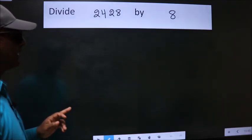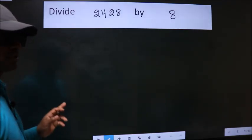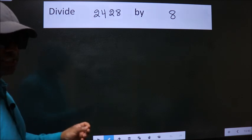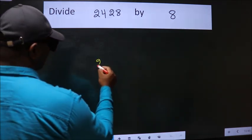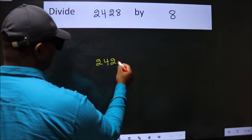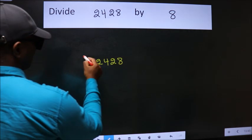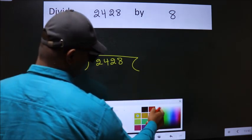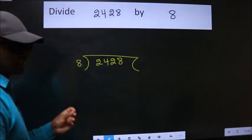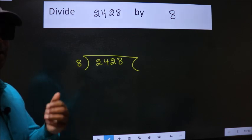Divide 2428 by 8. To do this division we should frame it in this way: 2428 here, 8 here. This is your step 1.